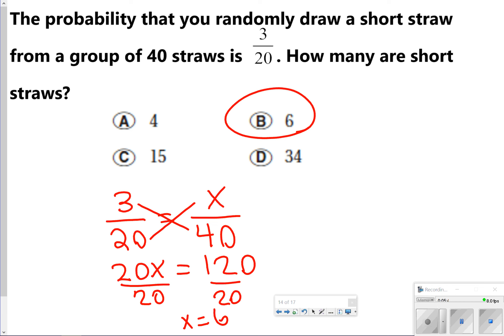Okay? So in a group of 40, there are 6 short straws that you would draw. Notice also 20 is half of 40. So 3 has to be half of 6.